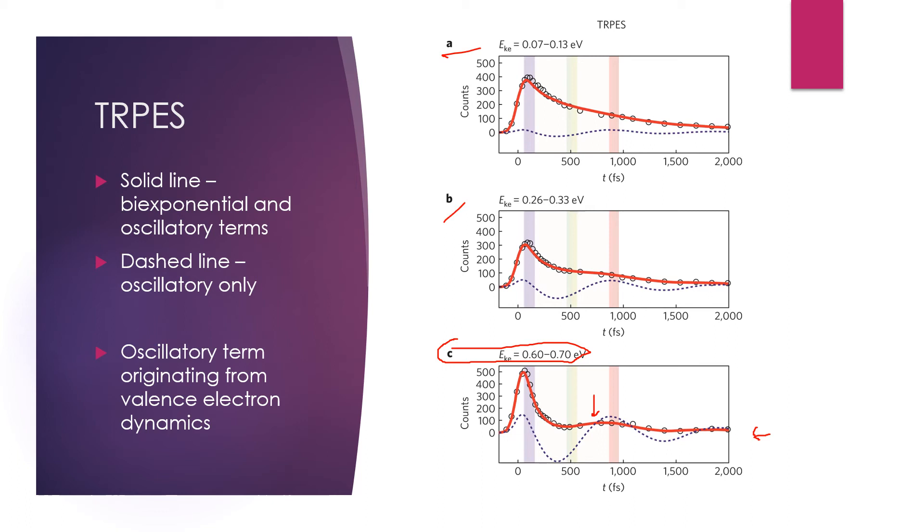The shaded regions on these spectra, the blue, the green and the red, correspond to the time regions during which the angular distributions were examined, which we'll look at now.